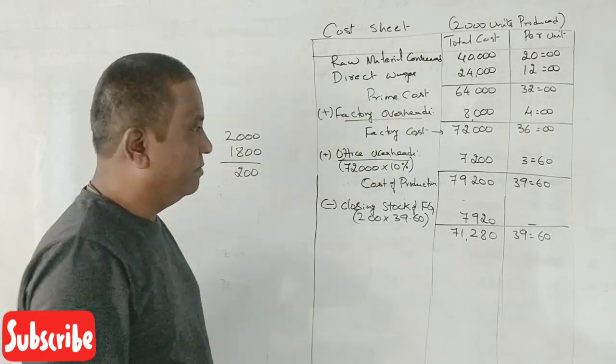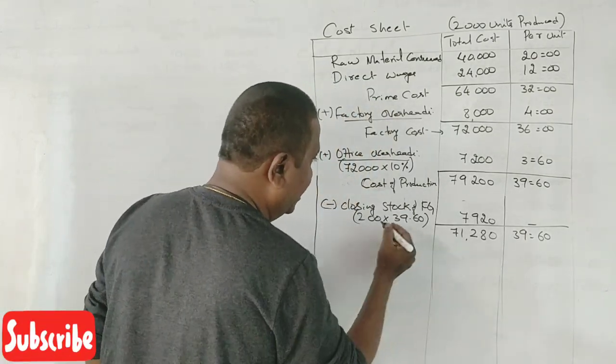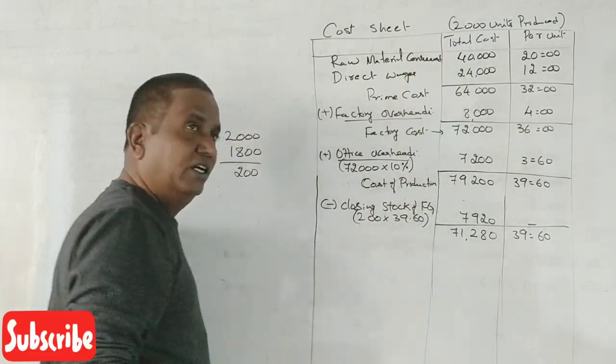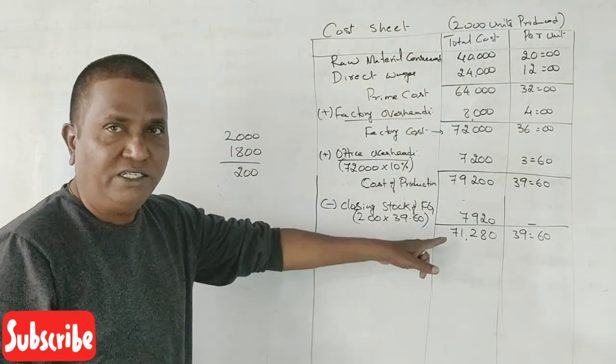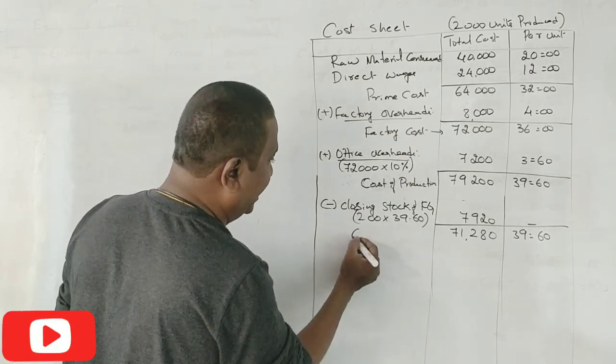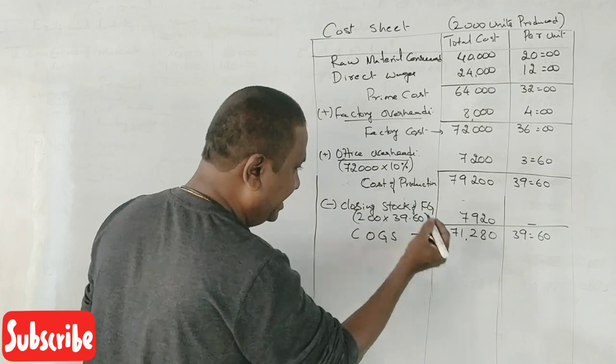Till here we were calculating for how many units? 2,000 units. Now we have deducted how many units cost? 200 units cost. Now from here onwards, this is called cost of goods sold.